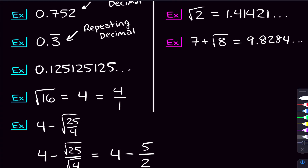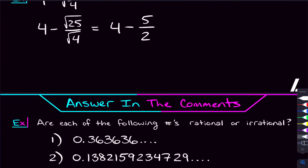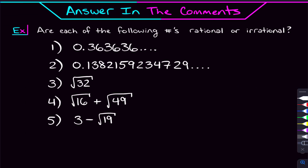So that's the difference between rational numbers and irrational numbers. If you feel pretty comfortable with this, here are five separate numbers for you to try — answer in the comments whether each of them is rational or irrational. Let me know your answers, and if you have any questions on anything we talked about in this video, let me know in the comments and I'll try to get back to you.